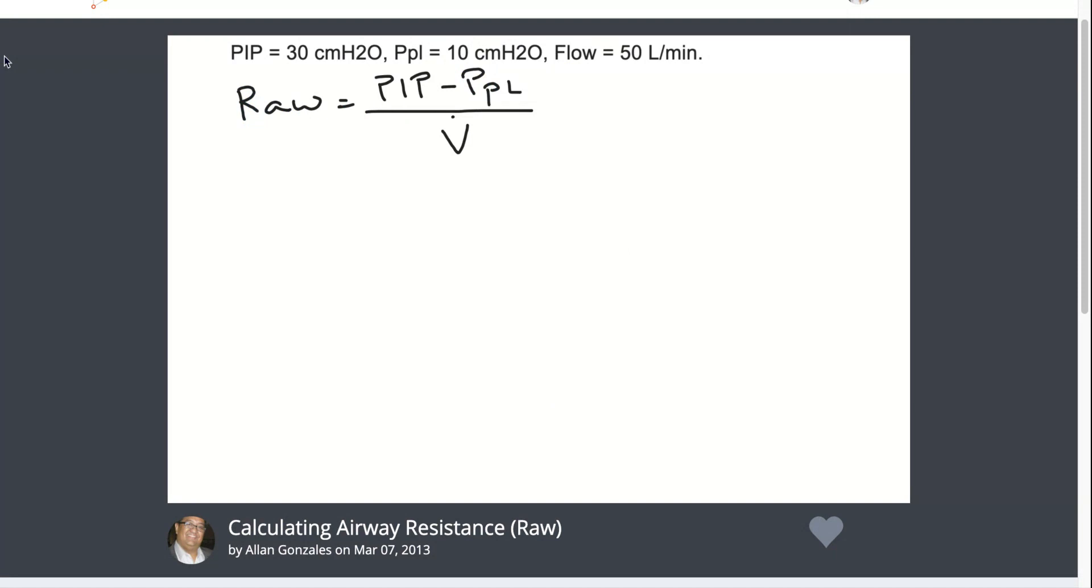As an example, given the PIP is 30 centimeters of water pressure, your plateau is 10 centimeters of water pressure, and the flow is 50 liters per minute.